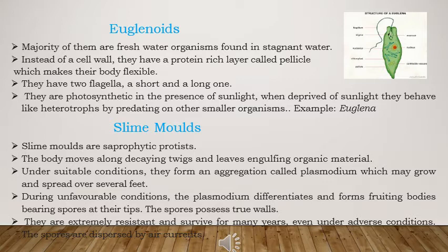Under suitable conditions, slime moulds form an aggregation called plasmodium, which may grow and spread over several feet. During unfavorable conditions, the plasmodium differentiates and forms a fruiting body having spores on the tips. These spores have two walls and are extremely resistant, surviving for many years in any adverse condition.